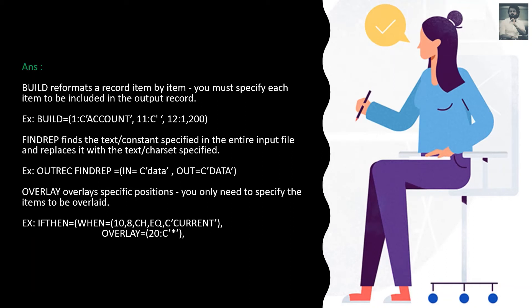For example: OUTREC FIND/REPLACE — if a character 'data' is found in the input file, change it to uppercase 'DATA'. OVERLAY is more specific — you only need to specify the items to be overlaid. For example, as shown in the previous question: when from position 10, length 8, equals 'CURRENT', you overlay the output file at position 20 with a star (*). Based on some condition you can overlay just a particular position.